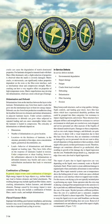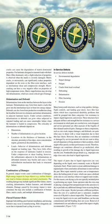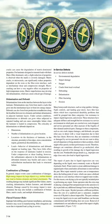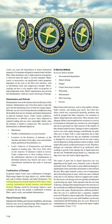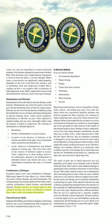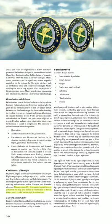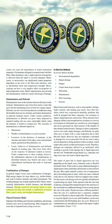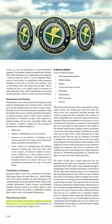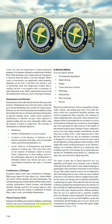Combinations of damages. In general, impact events cause combinations of damages. High energy impacts by large objects, e.g., turbine blades, may lead to broken elements and failed attachments, including significant fiber failure, matrix cracking, delamination, broken fasteners, and debonded elements. Damage caused by low energy impact is more contained but may also include combinations of broken fibers, matrix cracks, and multiple delaminations. Flawed fastener holes: improper hole drilling, poor fastener installation, and missing fasteners may occur in manufacturing, and hole elongation can occur due to repeated load cycling in service.